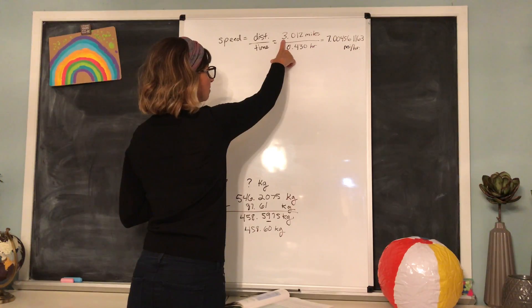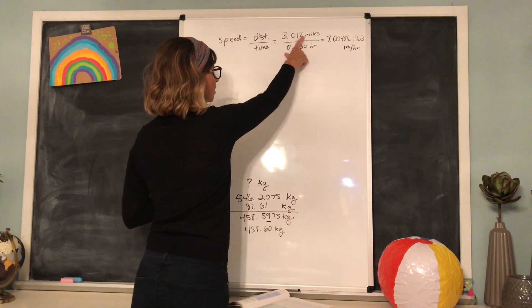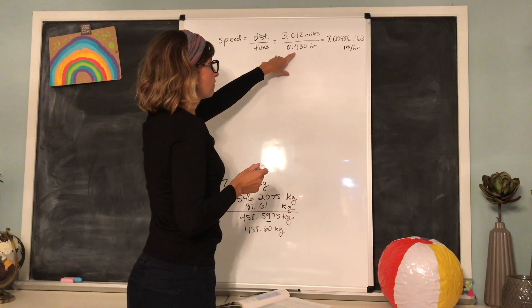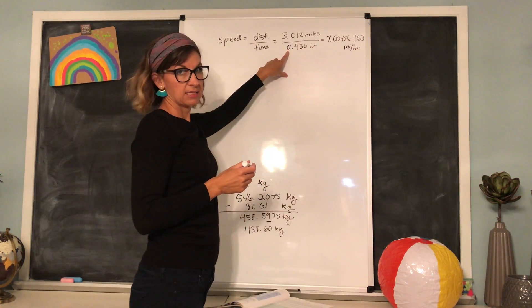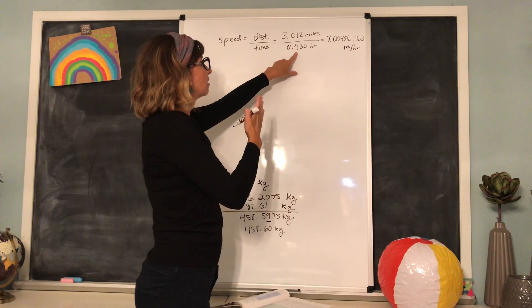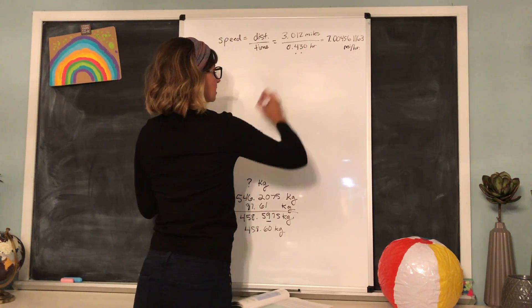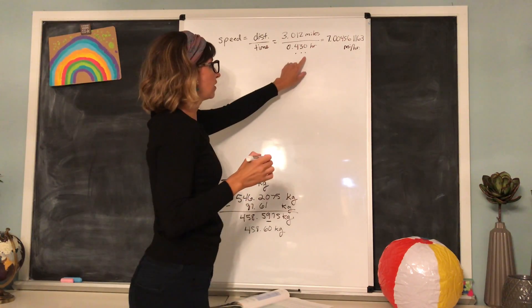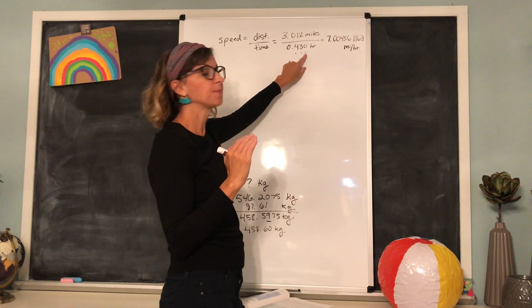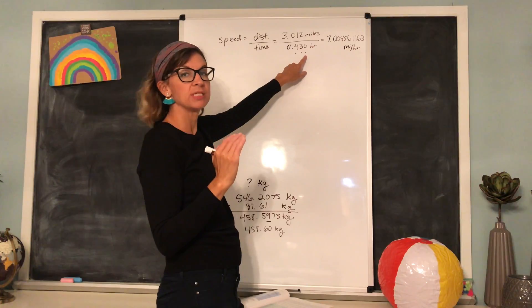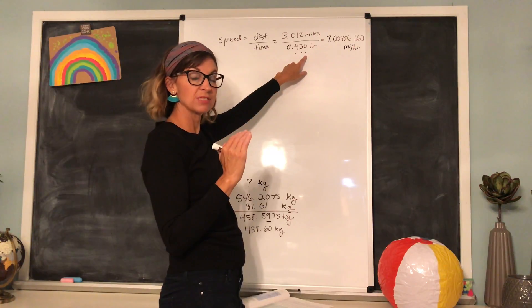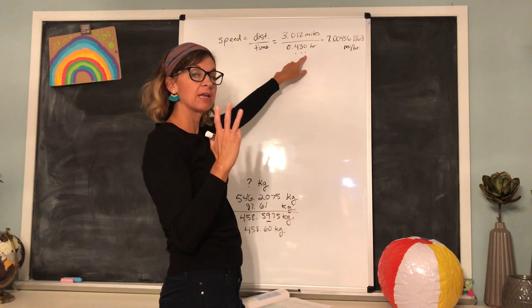In our distance here, how many do we have? 3 is 1, 0 is 1, 1 is 1, and 2 is 1. So here we have four significant figures. And in our time, 0.430, this 0 is not a significant figure because it is to the left of the decimal place. 4 is a significant figure, 3 is a significant figure. This 0 is a significant figure because it is to the right of the decimal place and it is the last digit in the number. So our time here has three significant figures. The measurement with the least significant figures was time with three, which means that our answer can only have three significant figures.